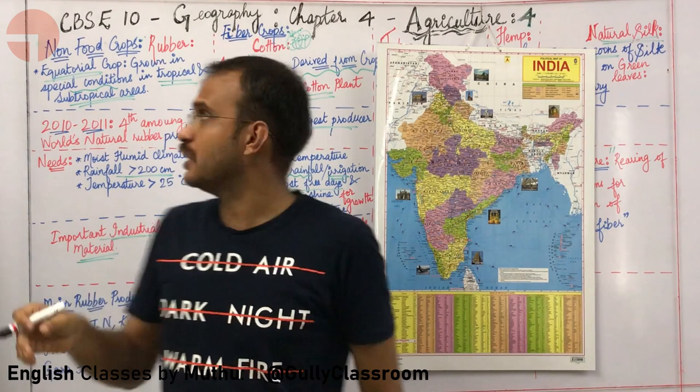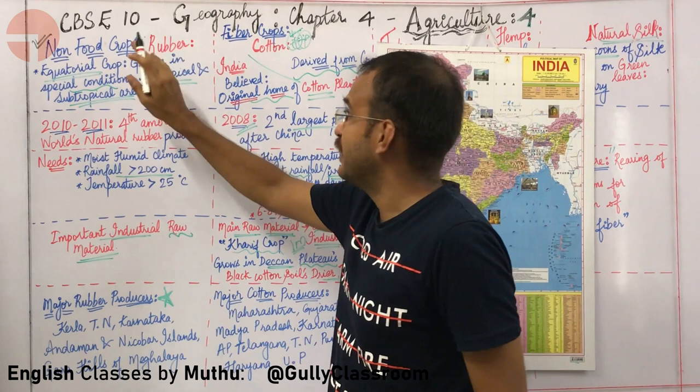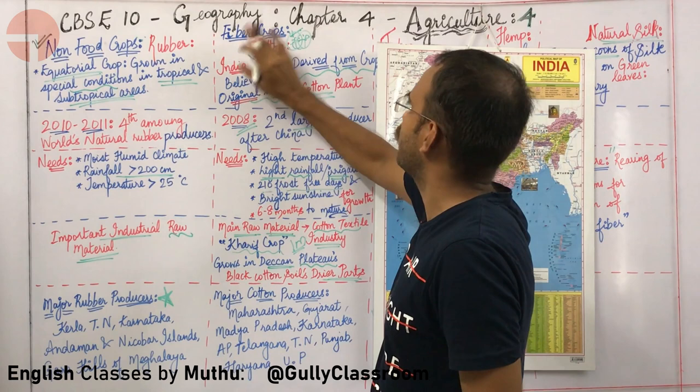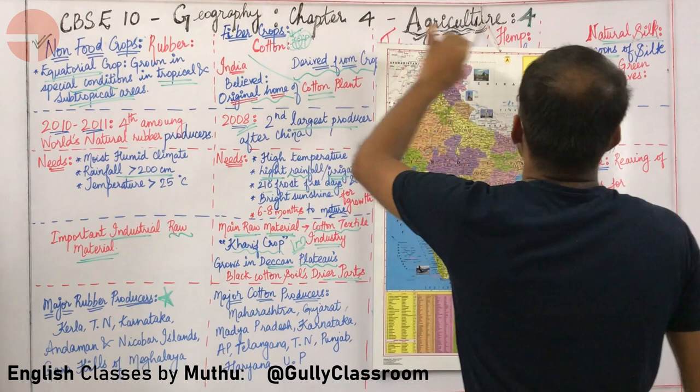In this lecture, we are going to learn about non-food crops in two specific topics. We will learn about rubber separately, and then we will learn about fiber crops — cotton, jute, hemp, and natural silk.